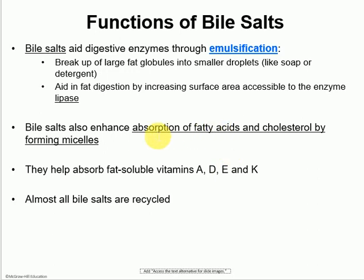Bile salts not only help in the absorption of fatty acids, but also cholesterol, by making them into little micelles. Micelles are fat surrounded by protein — fat is not water soluble, so you cannot transport fat in the blood unless you surround it with a protein coat. So micelles are a protein coat with fatty acid and cholesterol inside. When bile salts reach the large intestine and the small intestine, they are going to be reabsorbed and recycled so that we don't lose all of those bile salts in the feces.